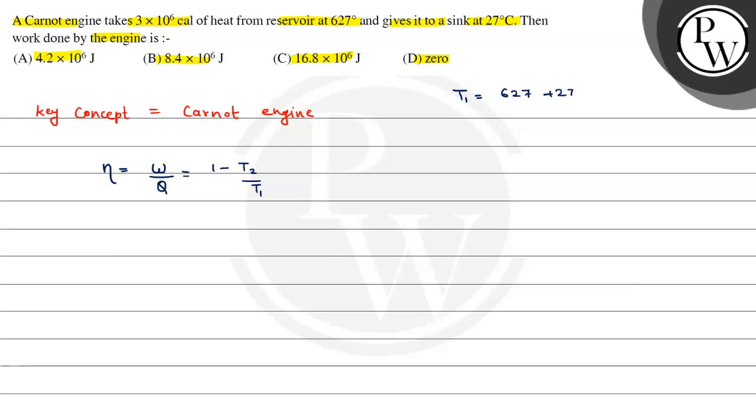Adding 273, it becomes 900 Kelvin. T2 is the lower temperature, so 27 plus 273, which becomes 300 Kelvin. Now just put the values and we will have our answer.